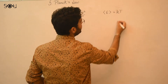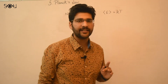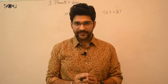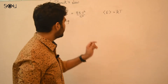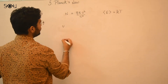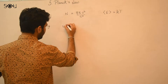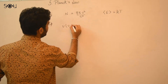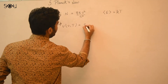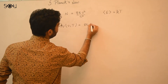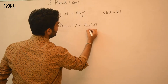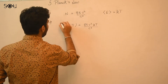We discussed this in the last video. In order to find the energy density, you multiply these two quantities. So the energy density of the electromagnetic radiation in terms of frequency and temperature is 8π ν² KT / c³. This is known as the Rayleigh-Jeans law.